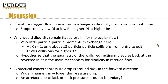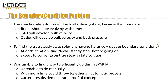A practical concern is that the pressure drop is about 80% in the forward direction, which isn't great — you want pretty much no pressure drop if you can help it. Wider channels might address this, and there may be significant wall friction, but I think it's probably an artifact due to lack of back pressure at the outlet boundary. We're holding the outlet at vacuum, which we probably shouldn't be doing. The steady-state solution we found isn't actually true steady state, because in reality the boundary conditions should be evolving with time — the inlet will develop a bulk velocity and the outlet will develop back pressure. To find the true steady-state solution, we should iteratively update the boundary conditions, finding the local steady-state solution at each iteration, and we'd expect this to converge to a true global steady state over time.